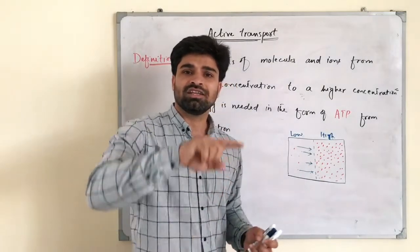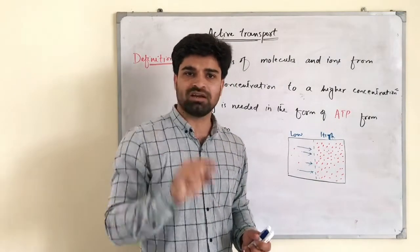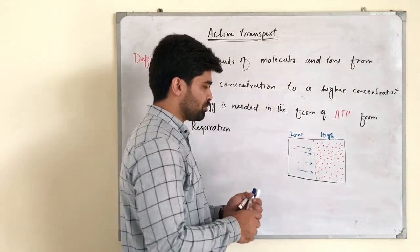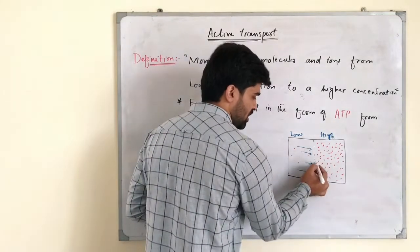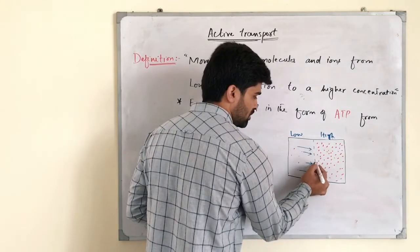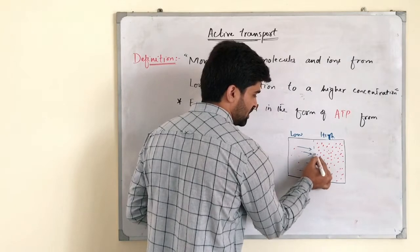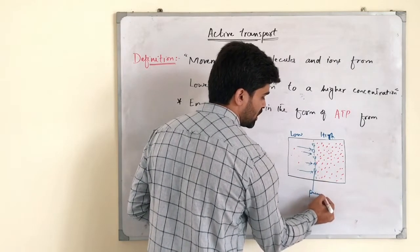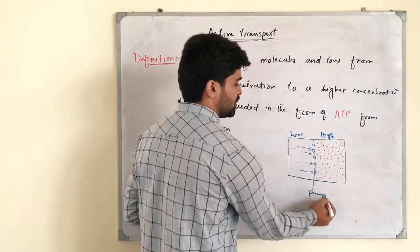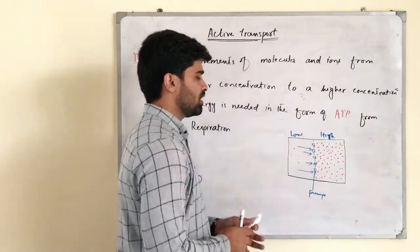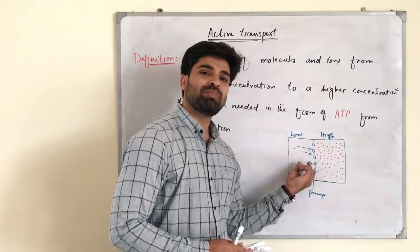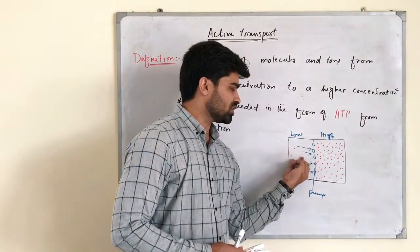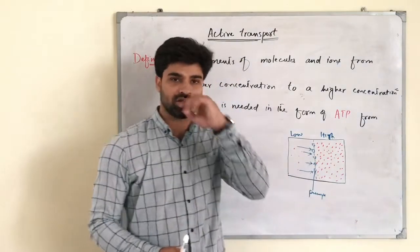In the cell membrane of plants and animals, there are pumps present. These pumps actively pump the molecules from the lower concentration to the higher concentration.